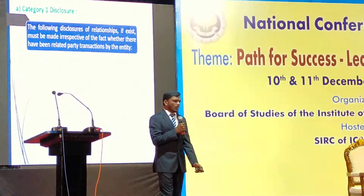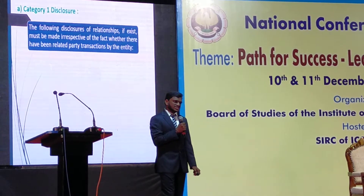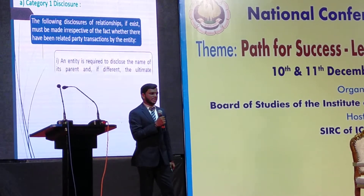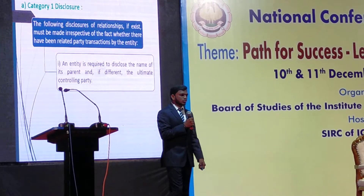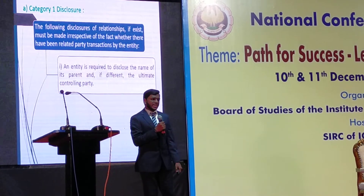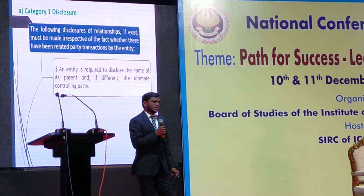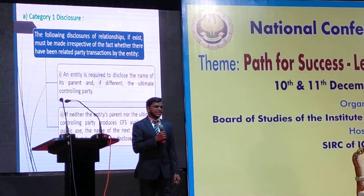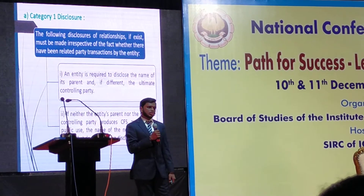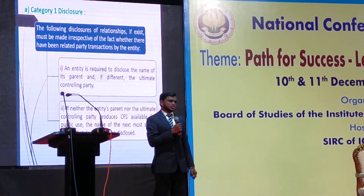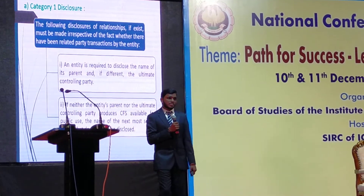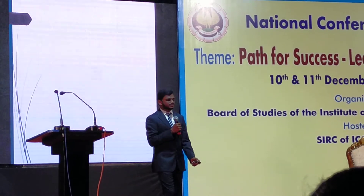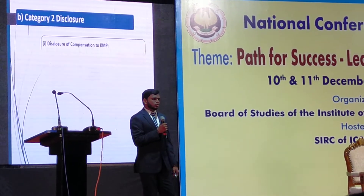Now let us discuss Category 1 in detail. The following disclosures of relationships, if they exist, must be made irrespective of whether there have been any related party transactions by the entity. An entity is required to disclose the name of its parent. If neither the entity's parent nor the ultimate controlling party is preparing consolidated financial statements available for public use, the name of the next most senior parent that does so shall be disclosed.